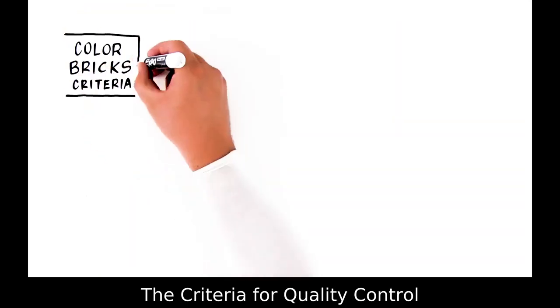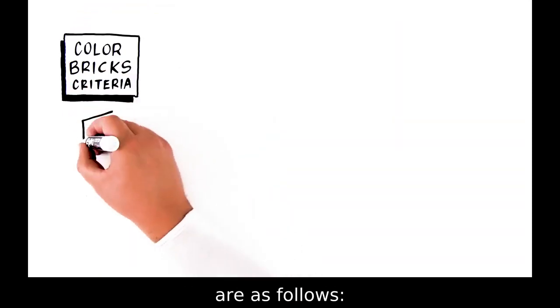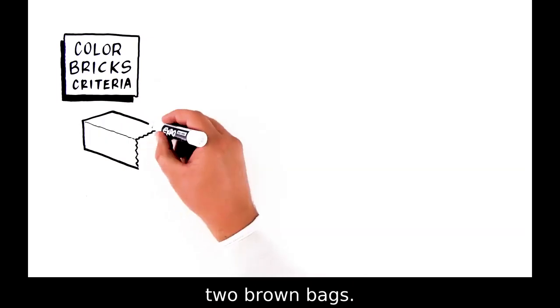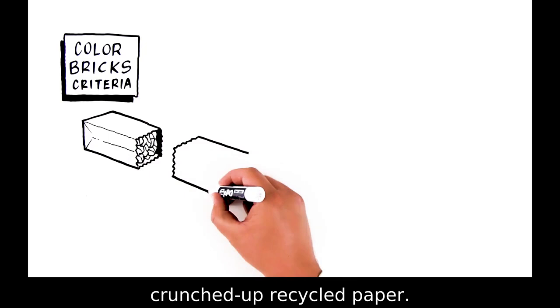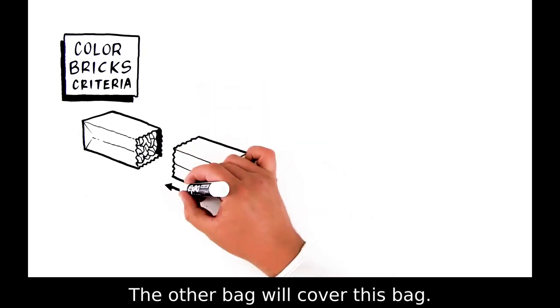The criteria for quality control are as follows. A brick must be made from two brown bags. One bag must be filled with four pieces of lightly crunched up recycled paper. The other bag will cover this bag.